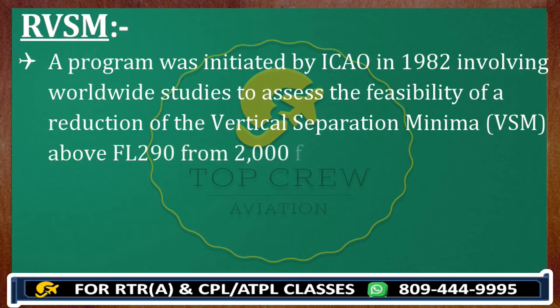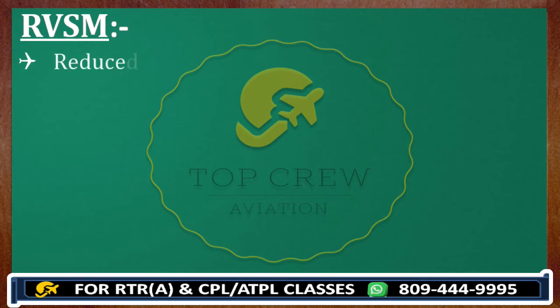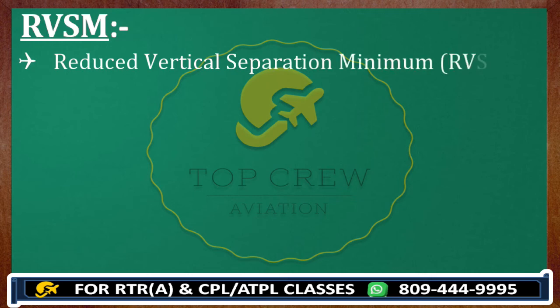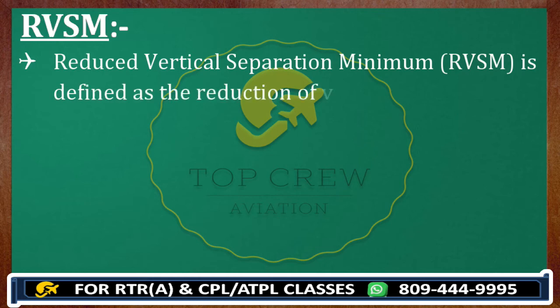Why was this needed? Because aviation is booming and passengers are increasing every day. We definitely need more space, more flight levels, more airports, more aircraft, and more pilots. This was one of the key requirements. ICAO assessed the feasibility and finally introduced and applied this across the globe. Reduced Vertical Separation Minimum is defined as the reduction of vertical space between aircraft from 2000 to 1000 feet, applicable between Flight Level 290 and Flight Level 410.